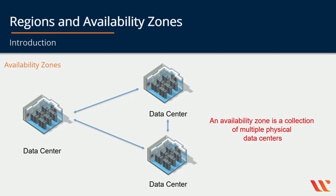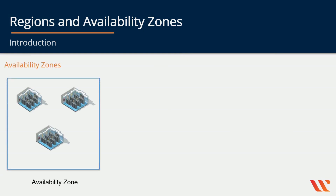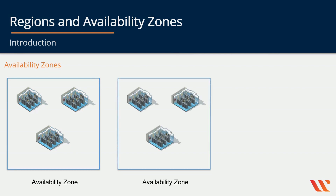Grouping data centers into availability zones is their way of ensuring that resources are more available. When you create a resource or write data onto one data center, it gets replicated across multiple data centers to ensure your data is made more available. Apart from having multiple data centers in one availability zone, they have gone a step ahead — a region can consist of multiple availability zones.